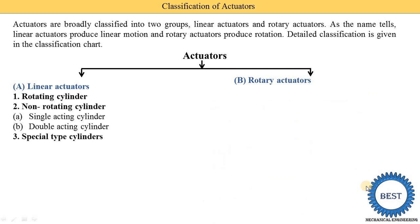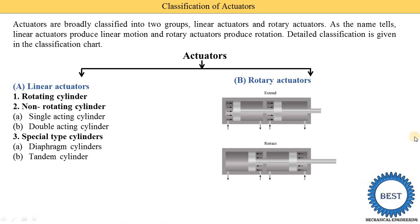The third type is special cylinders. In special types, the first is the diaphragm cylinder and the second is the tandem cylinder. In a tandem cylinder, two pistons are used with a piston rod and four ports. The first image shows extension and the second image shows retraction.